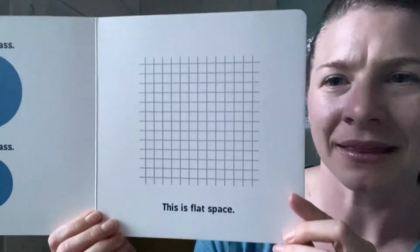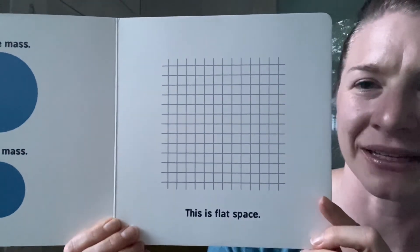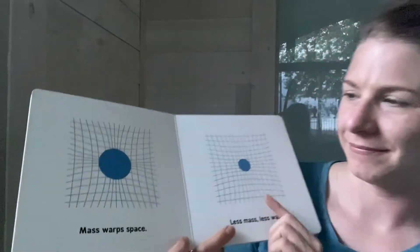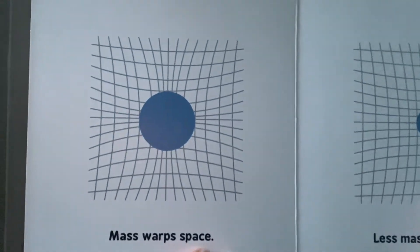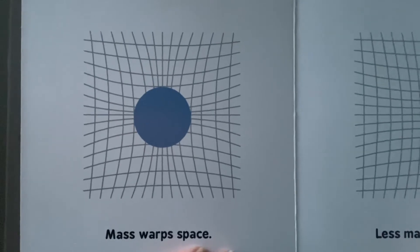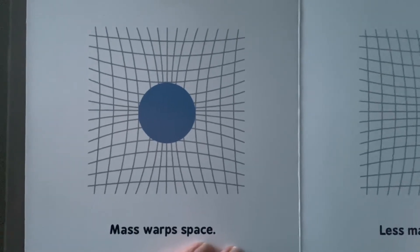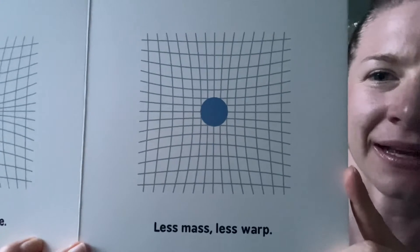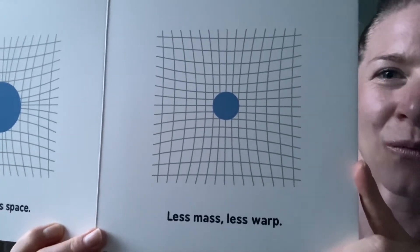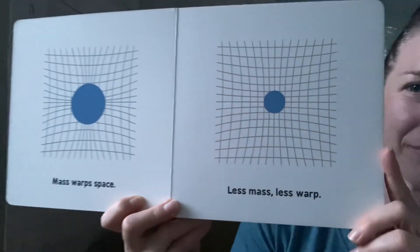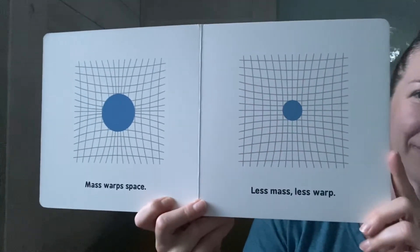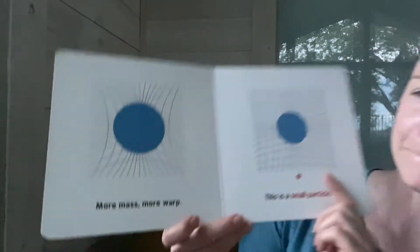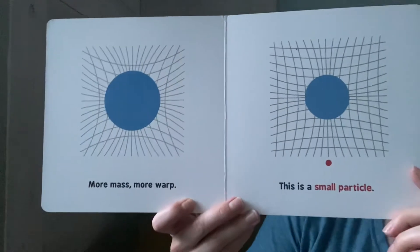This is a flat surface. Mass warps space. Less mass, less warp. More mass, more warp.